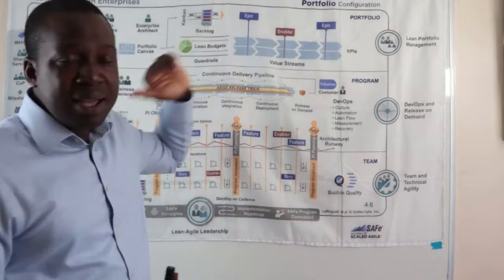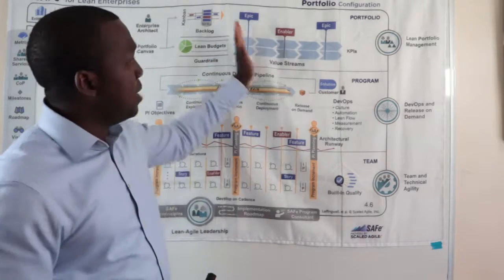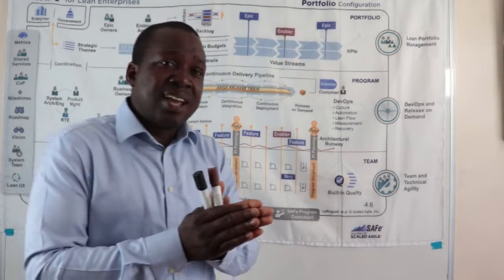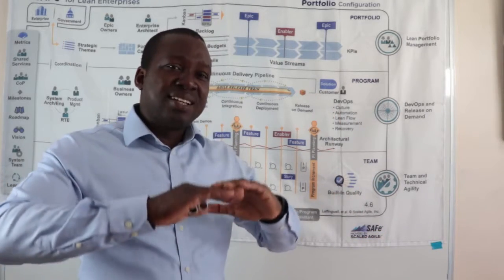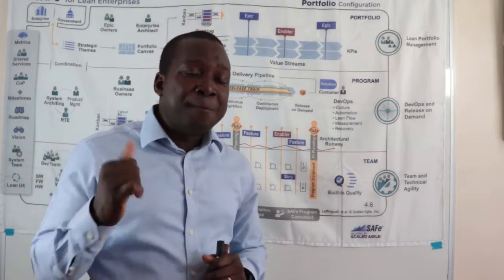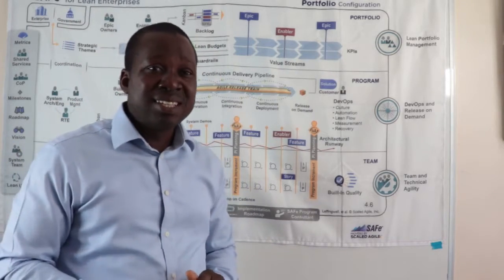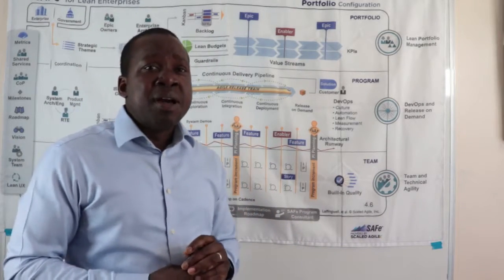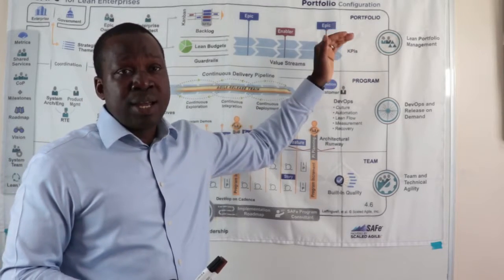Once the epic is signed off, it goes into the portfolio for delivery. We will manage the epic flow and make sure that we have a better understanding of our horizon and our roadmap to delivering our business strategy. This will be monitored with our key performance indicators that we locate in our strategy, helping us understand where we are and where we are going as an organization.